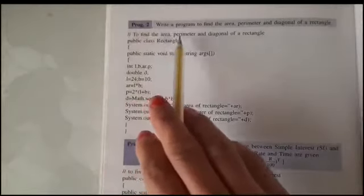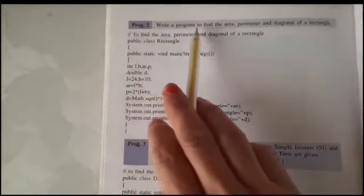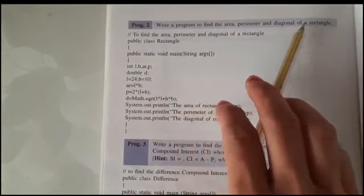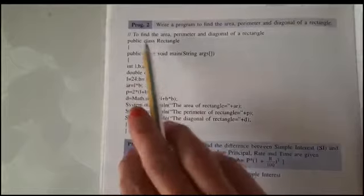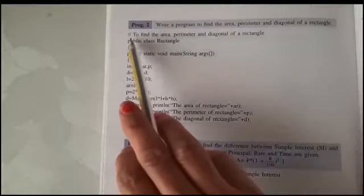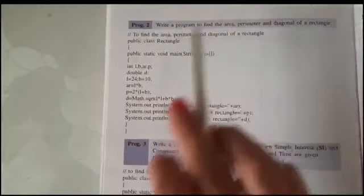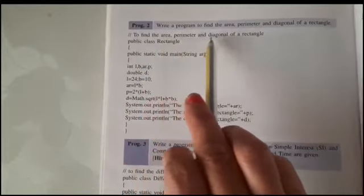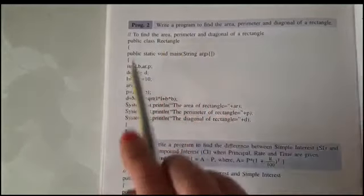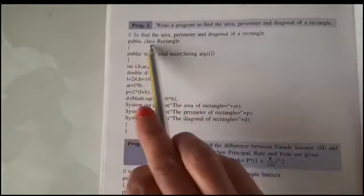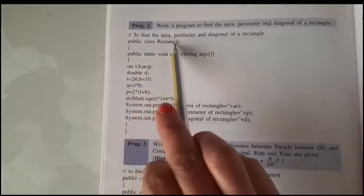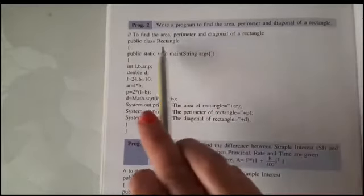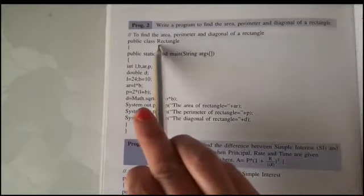The second example is: write a program to find the area, perimeter, and diagonal of a rectangle. First, we will write what we will find in this program: to find the area, perimeter, and diagonal of a rectangle. Public class — we will take the name 'Rectangle' because we are finding area, perimeter, and diagonal of a rectangle, so the class name is Rectangle.